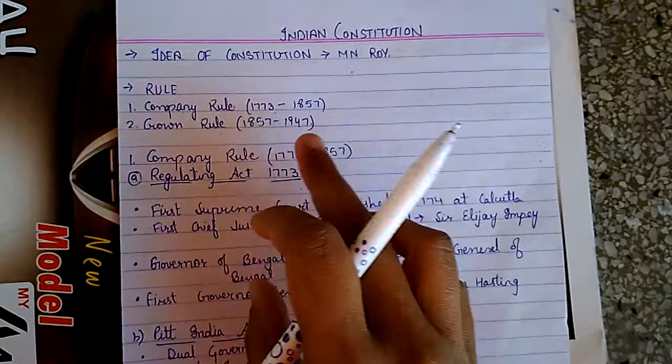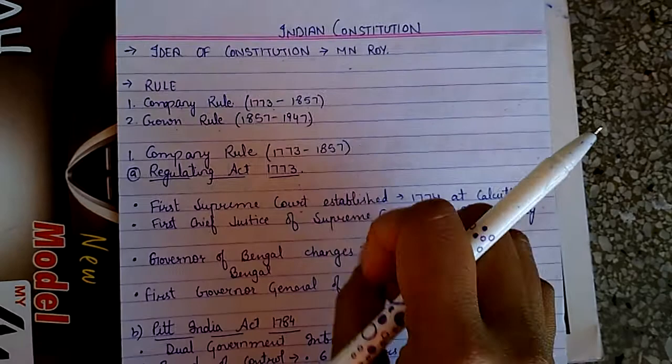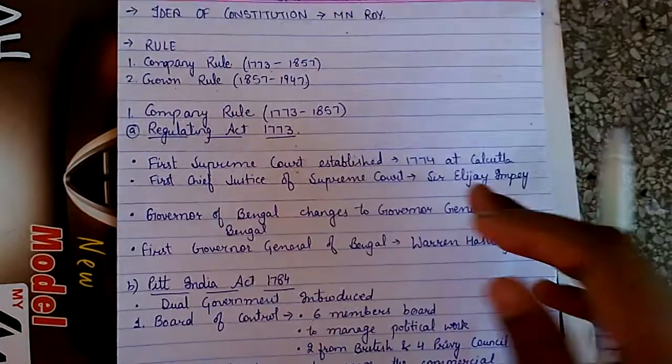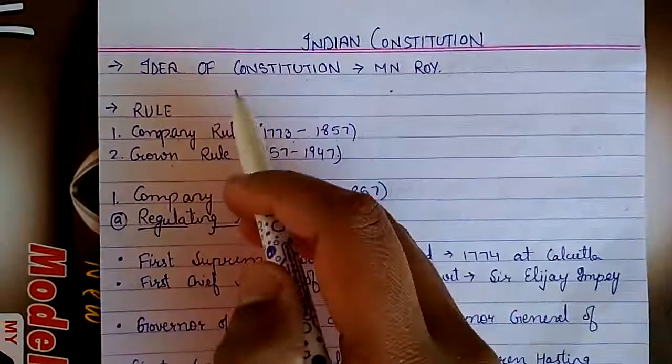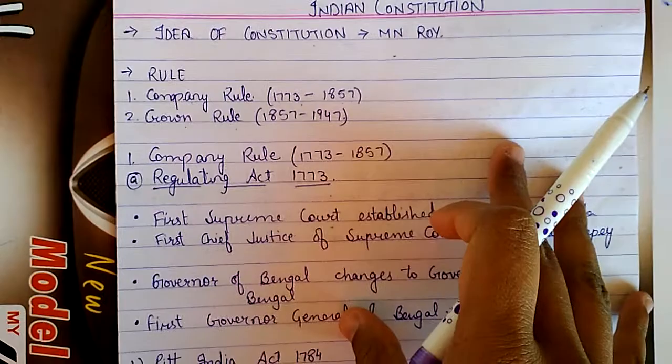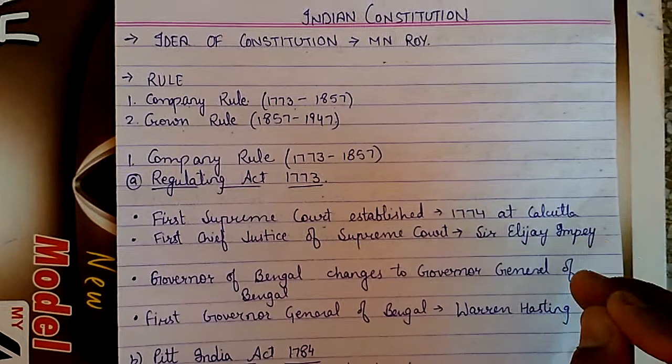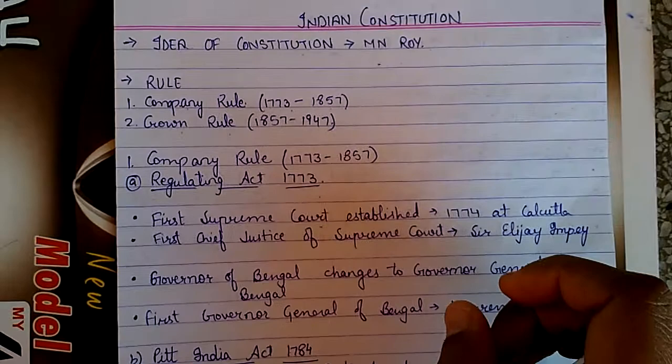The idea of the Indian Constitution was given by MN Roy. We will study some rules — Company Rules and Crown Rules — about how the idea developed. The rules have been divided into two parts: first was Company Rule, from 1773 to 1857, and second was Crown Rule, from 1857 to 1947.